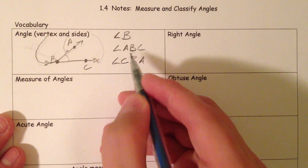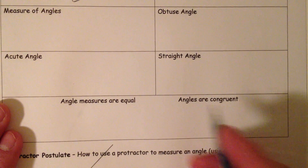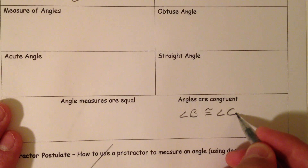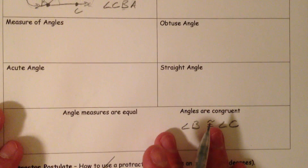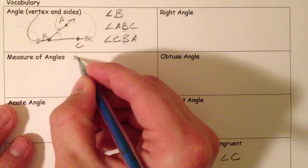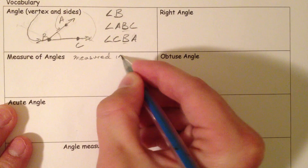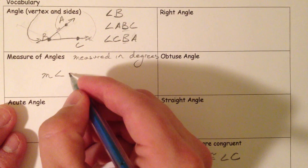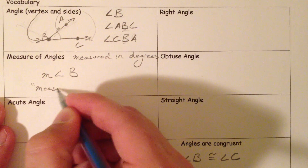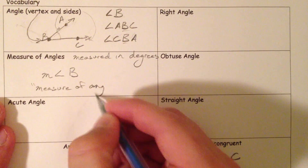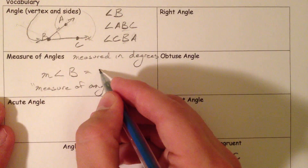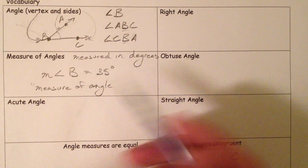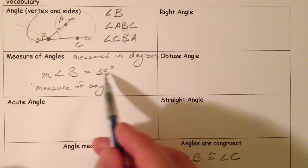If we just refer to the angle symbol, we're talking about the angle itself. And kind of like lengths, angles are congruent — we could say angle B is congruent to angle C. But if we're talking about things being equal, we say the measure of angles, which is measured in degrees. You say 'measure of angle B,' and you always include the M when it's equal to a number, like 35 degrees. You would never say just 'angle B equals 35' without the M.